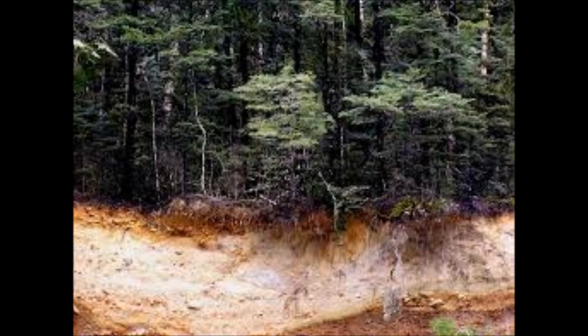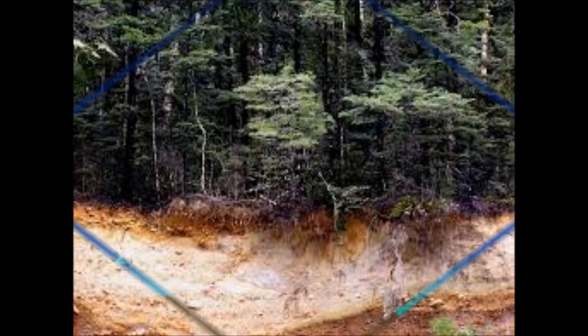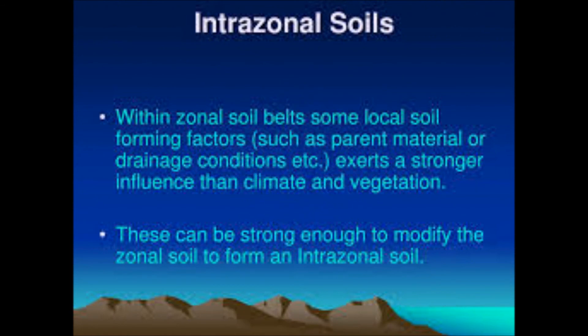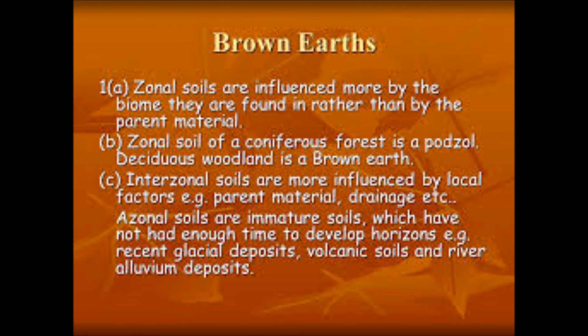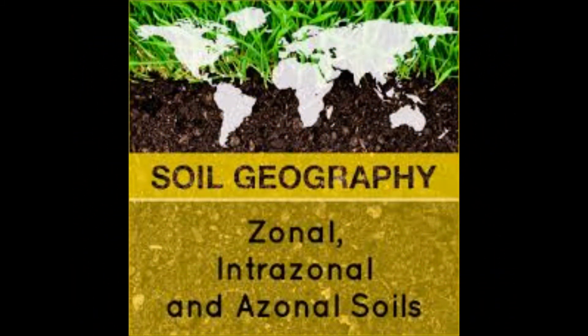World soil distribution: there are three main types of soil — clay, sandy, and loamy. There are also other types depending on the underlying rock, climate, and vegetation. Loams are a mixture of clay, sand, and silt and are more fertile than other soils. Because climate plays an important role in soil formation, soils differ widely from one major climatic zone to another.